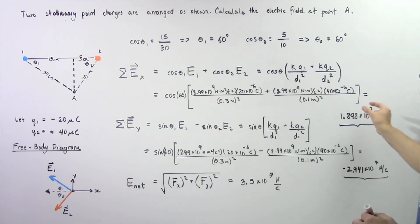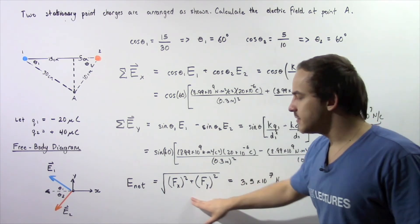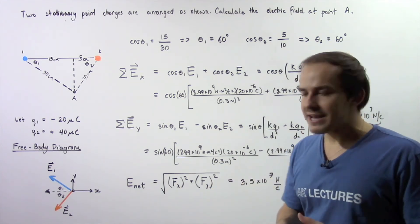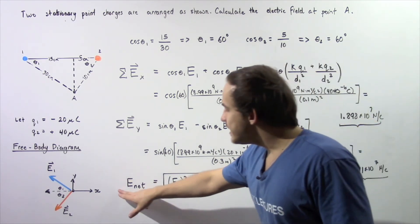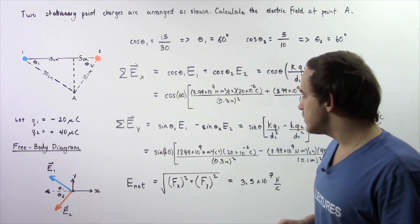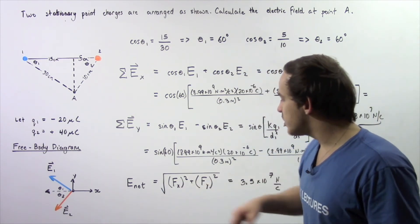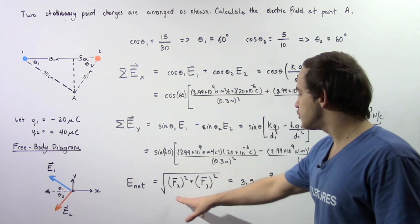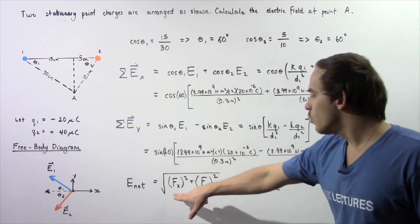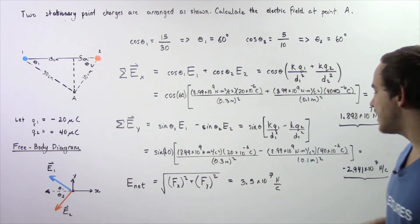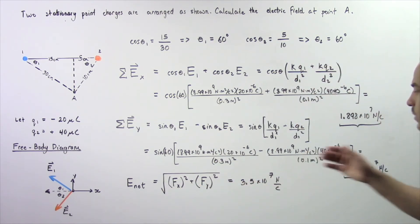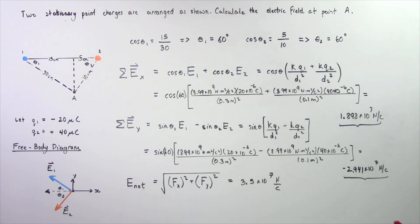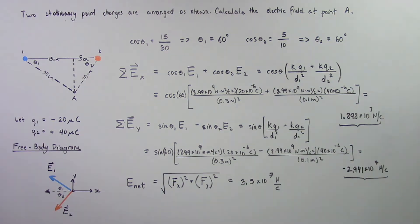Finally, we plug our values into the net electric field equation: the net electric field equals the square root of the sum of the squares of the x and y components. Plugging in the values and calculating, we get a net electric field of 3.5 times 10 to the 7 newtons per coulomb.